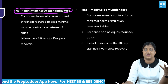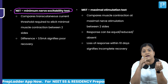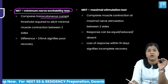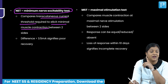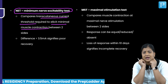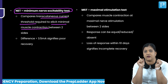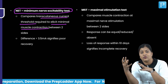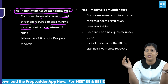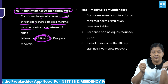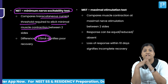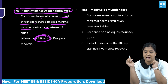The minimal nerve excitability test measures the minimum current required to excite a nerve. Transcutaneous currents are applied to elicit minimal facial muscle contraction, comparing right and left sides. If the right side requires 10 mA and the left only 2 mA, the right side has a conduction problem. If the difference between the two sides is more than 3.5 mA, it signifies poor recovery.